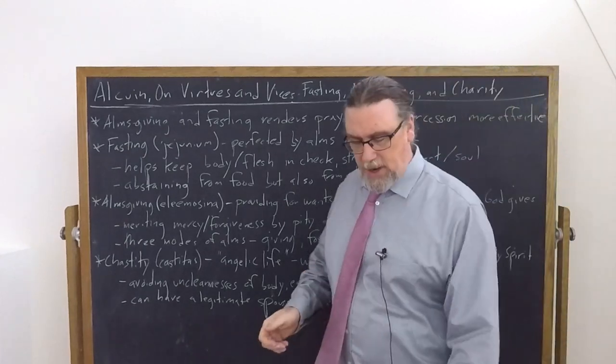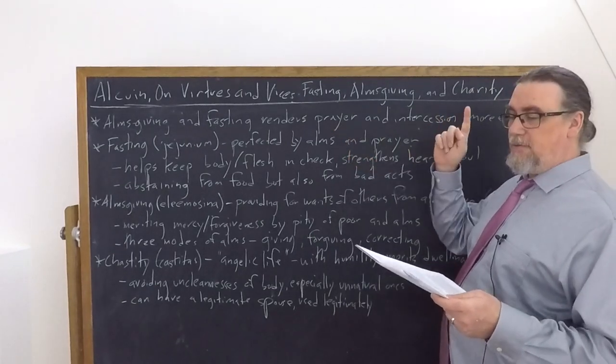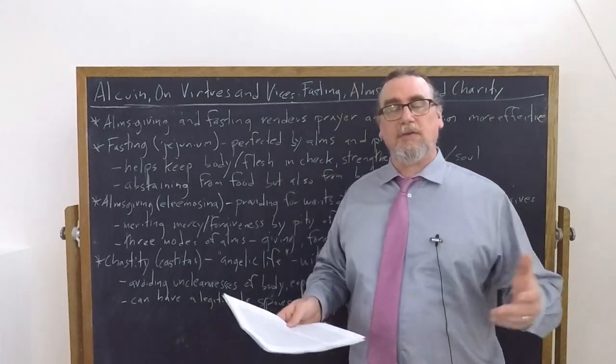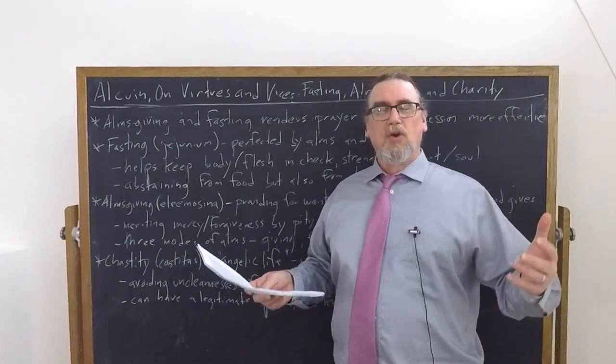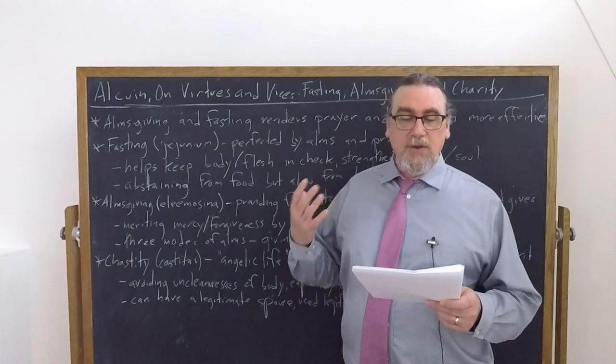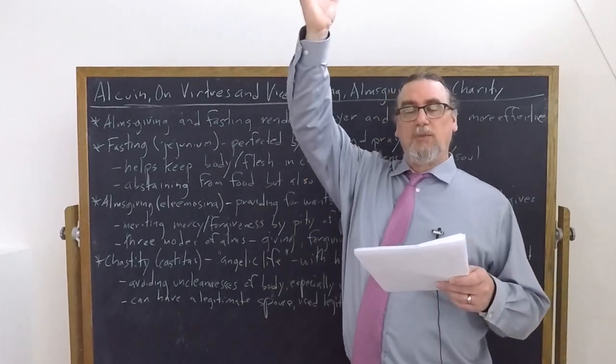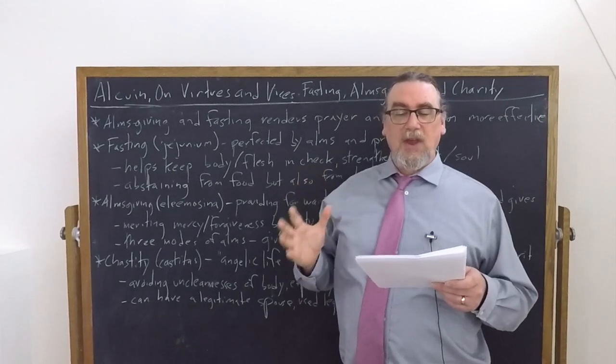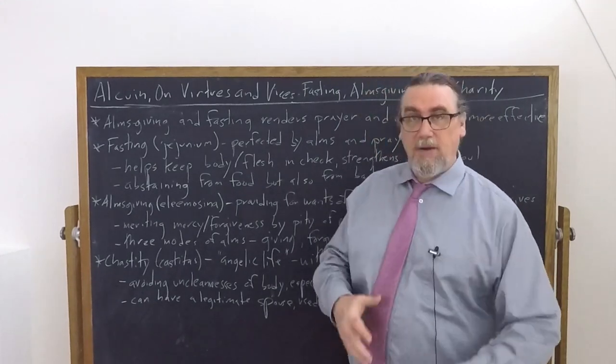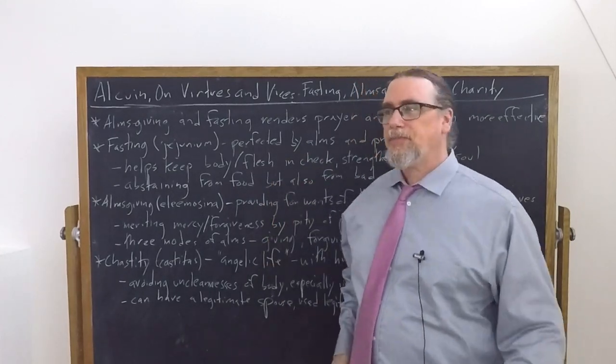And he says something very interesting in chapter 17 about almsgiving. He tells us that almsgiving and fasting have a particular connection with prayer and intercession. This is not just a typical medieval Christian point of view. We can find this in a number of other spiritual traditions as well. And he says intercession for sins is most effectual in almsgiving and fastings. And the prayer raised up from such decisions ascends quickly to divine ears.